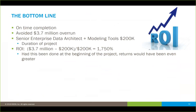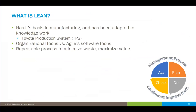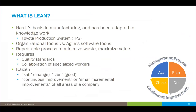Now, very quickly — what's lean and how do we apply it? We talked about its basis in manufacturing, and it's been adapted to knowledge work and software methodology. It grew out of things like the Toyota Production System. The really important thing is it's an organizational focus versus a pure software focus. What you're really looking at is a repeatable process to minimize waste and maximize value in the organization, requiring quality standards and collaboration of specialized workers recognizing their roles. There's also the fundamental philosophy of Kaizen — ka means change and zen means good, so 'change for good' — rooted in continuous improvement, making small incremental improvements in all areas.